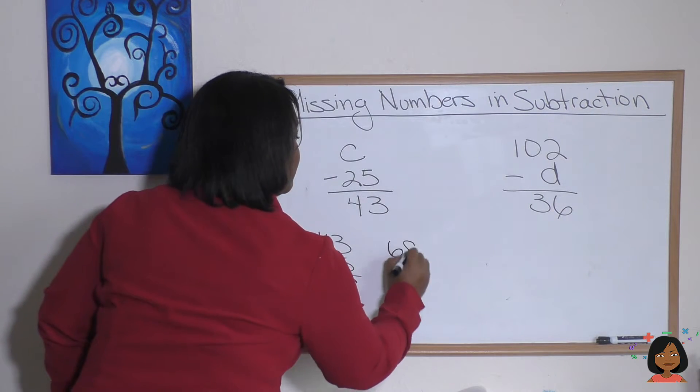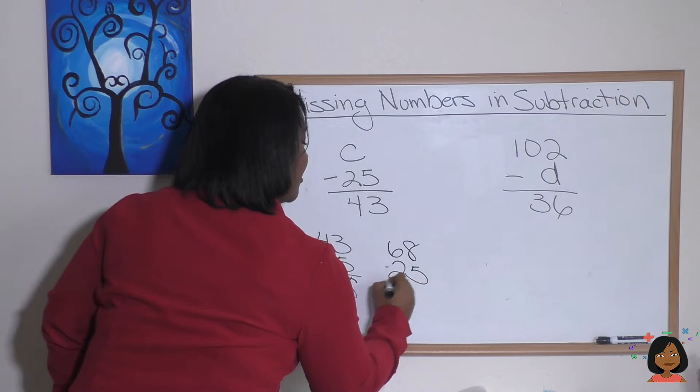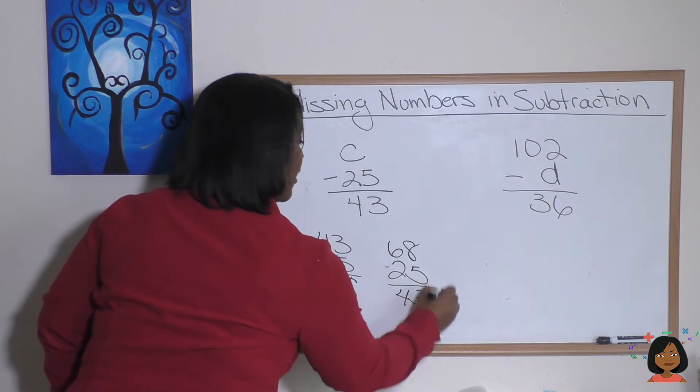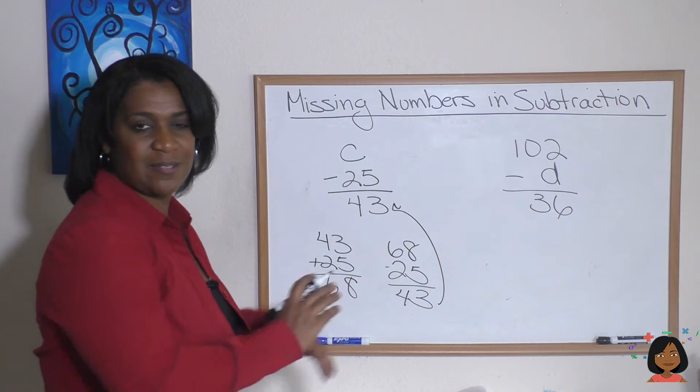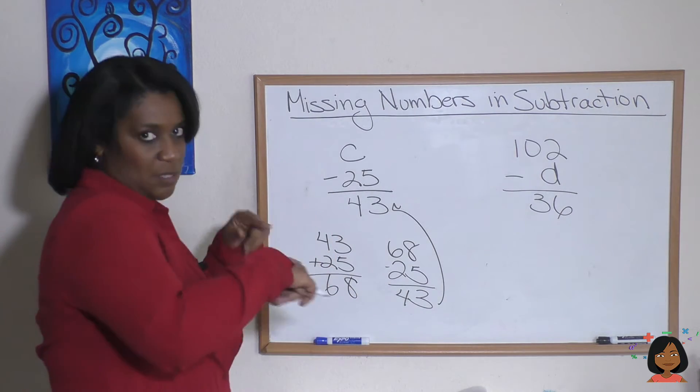But we're going to check it: 68 minus 25 is 43. It checks out! So again, missing minuend, do the opposite—add.